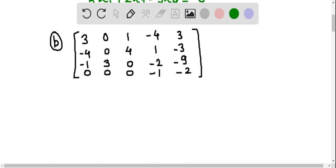From the first row, we can write 3x1 plus x3 minus 4x4 is equal to 3.